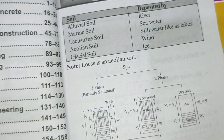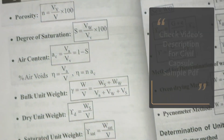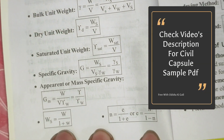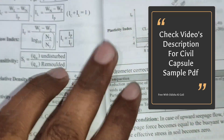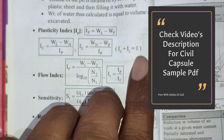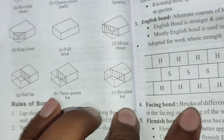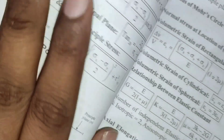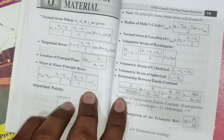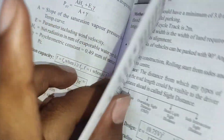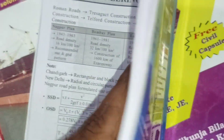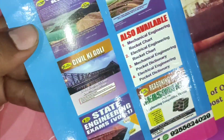For example, soil mechanics is included and you can see how it is presented — it's just like short notes, an alternative to short notes. I will give you a PDF of this civil capsule in the video description, so you can check the link and download it. It's not the complete capsule, but I will give you samples of many subjects so you can understand the content.